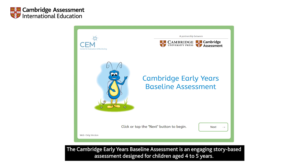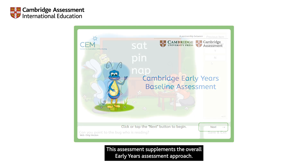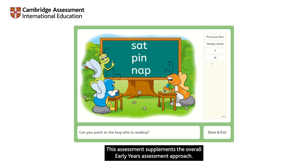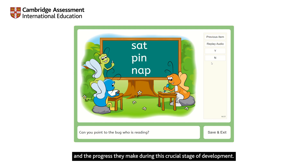The Cambridge Early Years Baseline Assessment is an engaging story-based assessment designed for children aged four to five years. It is an integral part of the Cambridge Early Years Programme, taken at the beginning and end of EY2. This assessment supplements the overall Early Years Assessment approach and helps you see an objective picture of what your children know and can do, and the progress they make during this crucial stage of development.